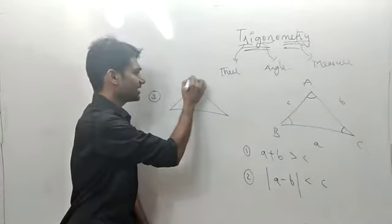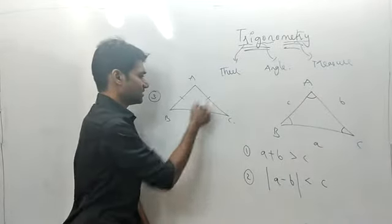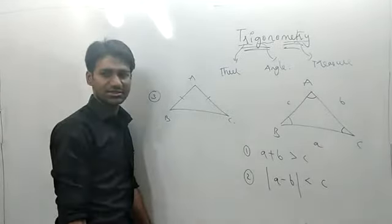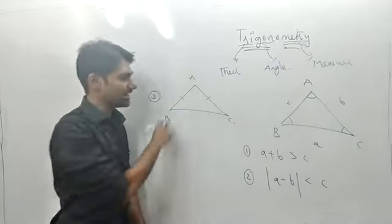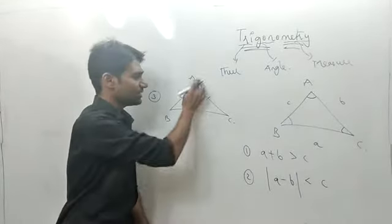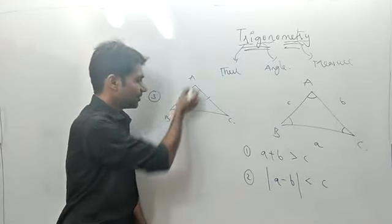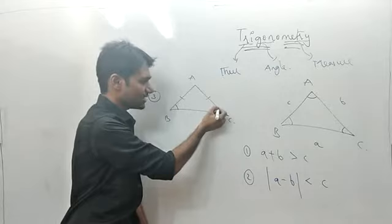If we have an isosceles triangle where AB equals AC, then we know that the opposite angle of AB and the opposite angle of AC should be equal. So angle C equals angle B in this case.